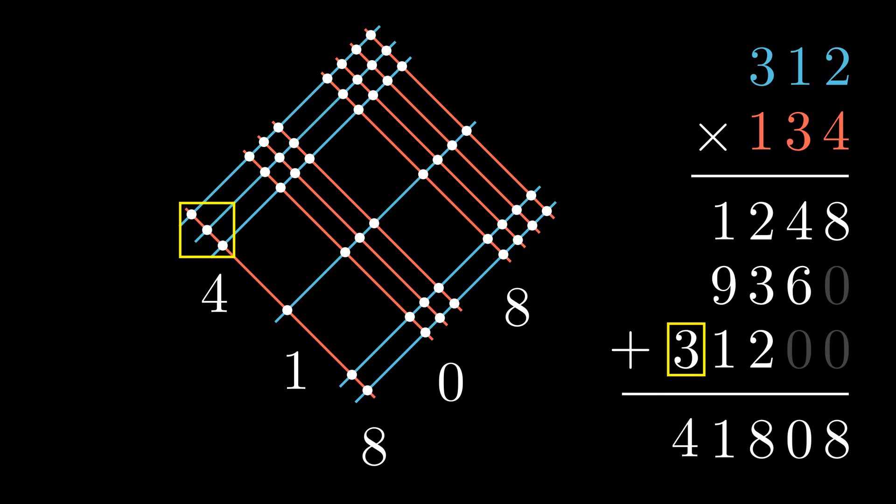So no matter what method you fancy, as long as you did correctly, 312 times 134 will always be 41,808.